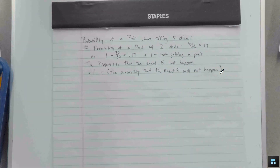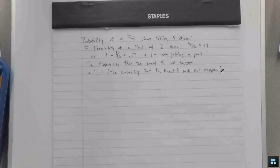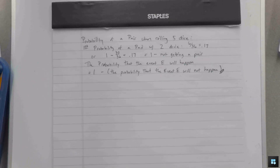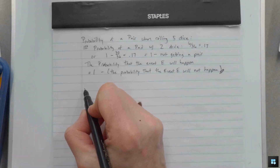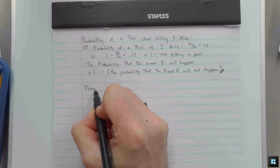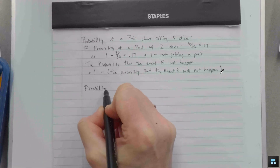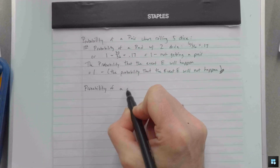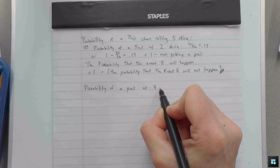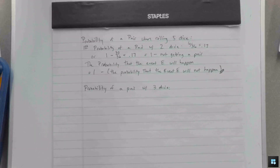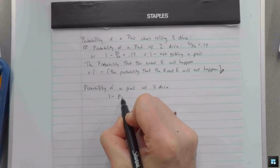It's sometimes easier to calculate not getting something than getting it, which is the case when looking for pairs with five dice. So we say: probability of a pair equals 1 minus the probability of no pair. Let's look at three dice first.